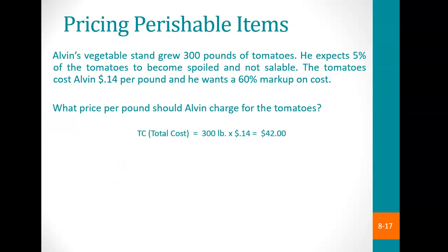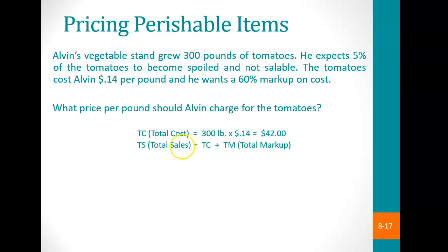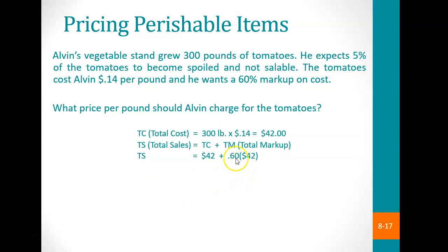First, look at Alvin's total cost: 300 pounds at $0.14 per pound gives a total cost of $42. The markup is 60% of the cost. So total sales equals total cost plus total markup: $42 plus 60% of $42. Adding those together gives a total sales price of $67.20.